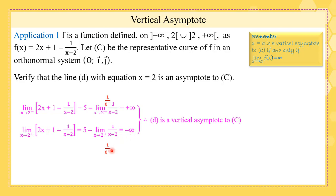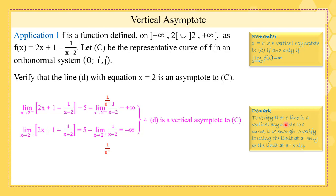From here we can tell that D is a vertical asymptote to C, and D is the line whose equation is x equals 2. Pay attention: to verify that a line is a vertical asymptote to a curve, it's enough to verify it using the limit at a-minus only or at a-plus only. Here I found the limit at 2 minus — it suffices to find the limit at 2 minus only or at 2 plus.